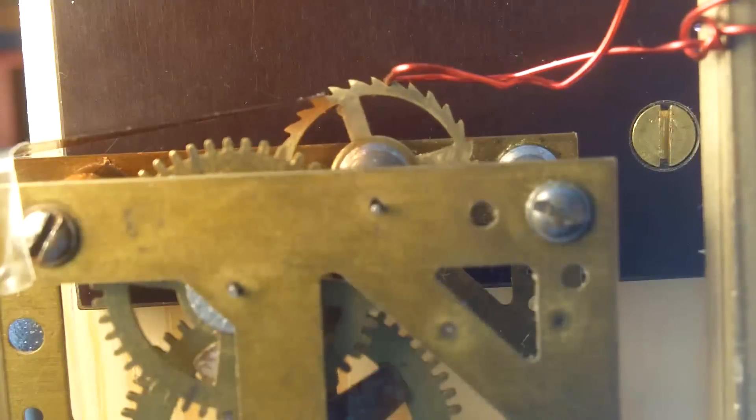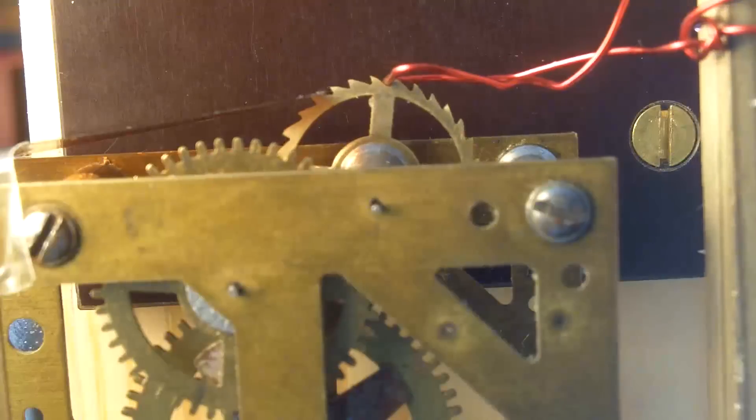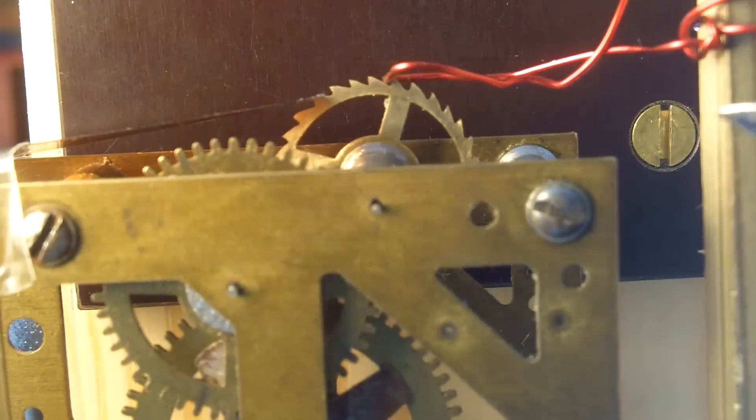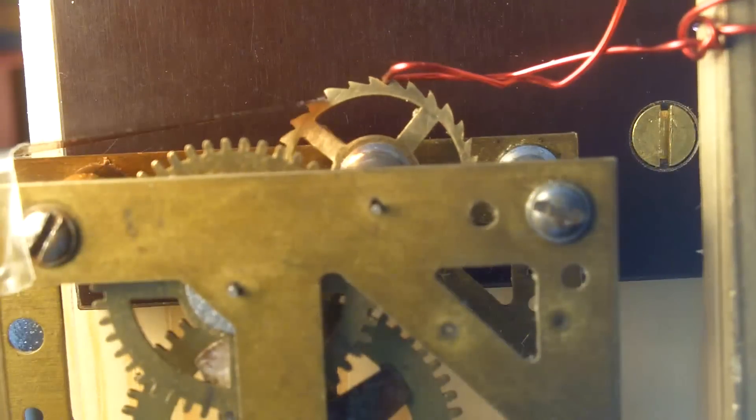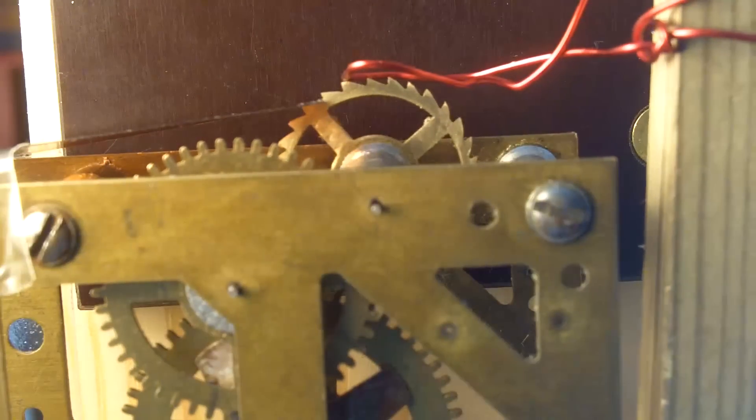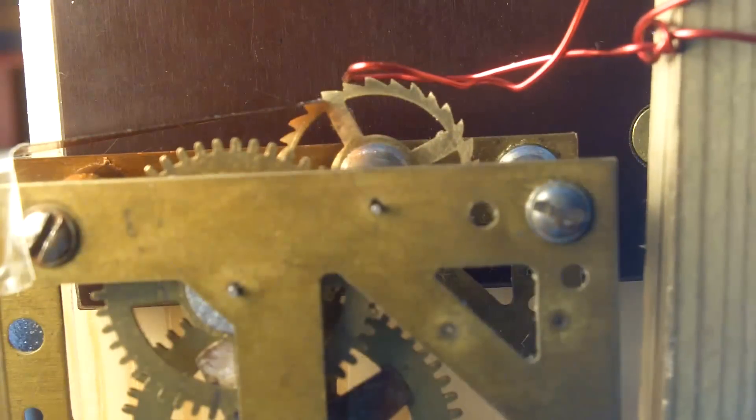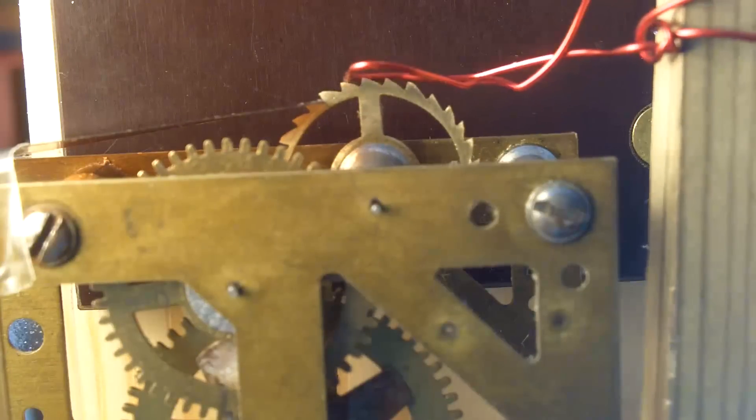So each successive swing, the pawl just goes forward and grabs another tooth and pulls it around. It's doing that every two seconds, so it'll pull that little ratchet wheel round once a minute. Just give it a bit more energy... give it a tap. Tapped it at the wrong time. So you can get the idea from that.